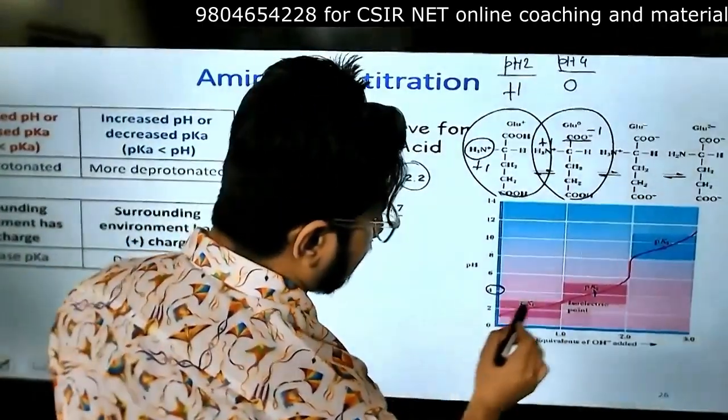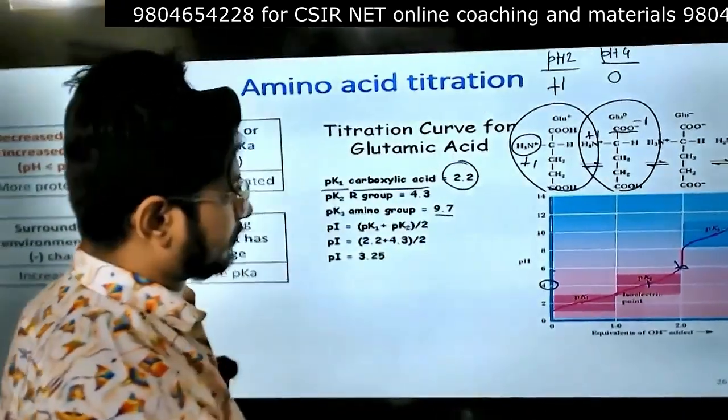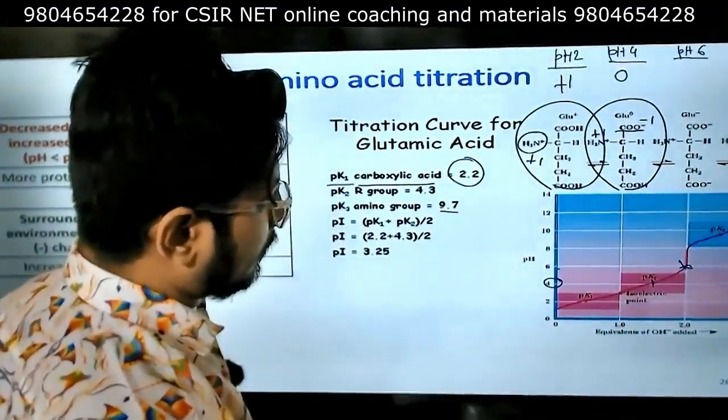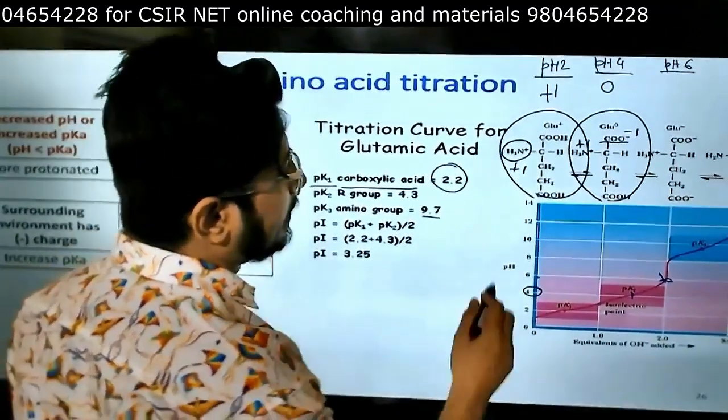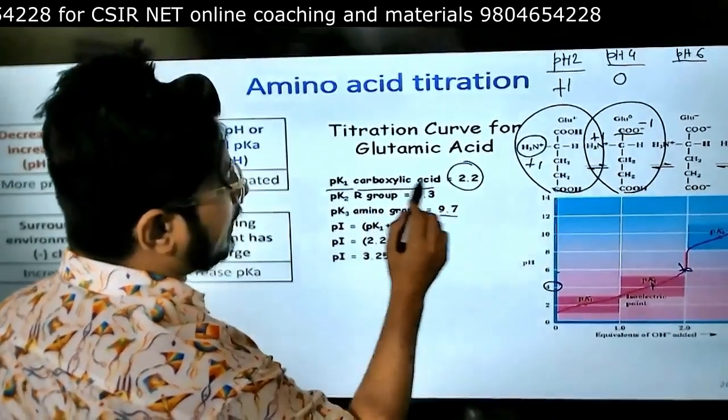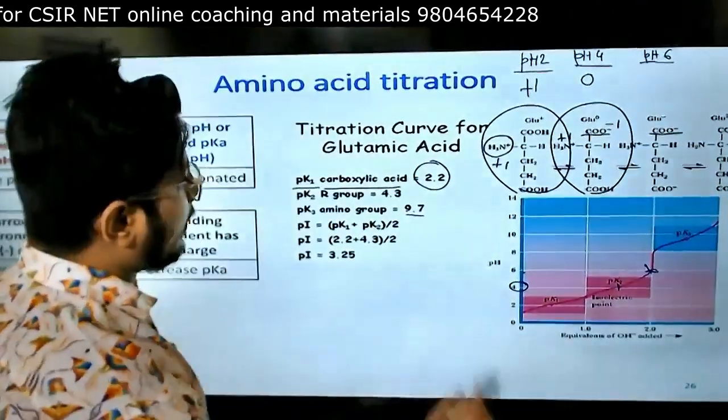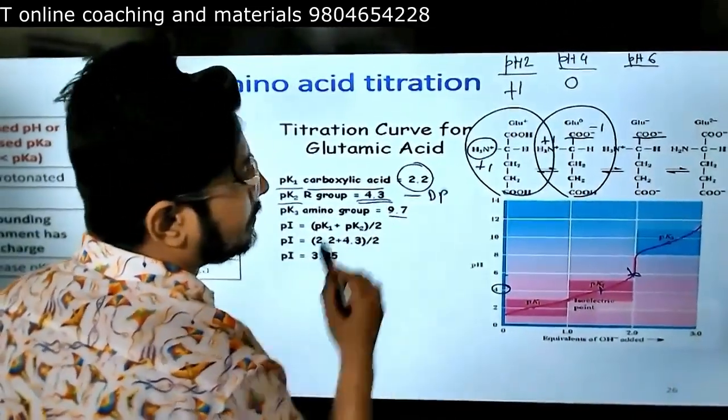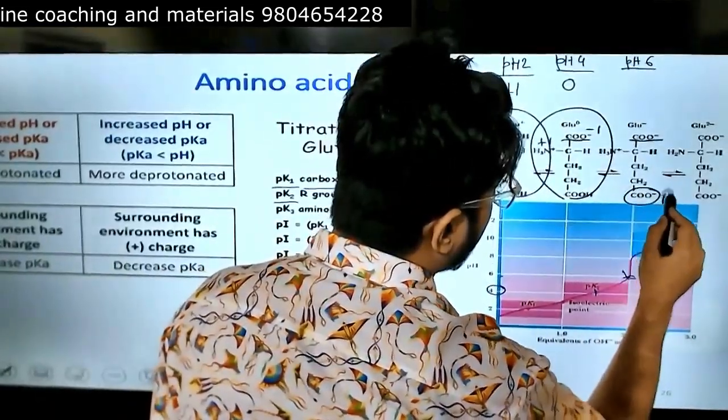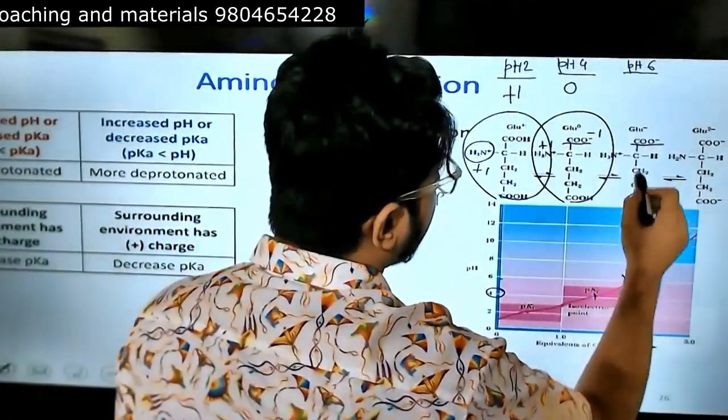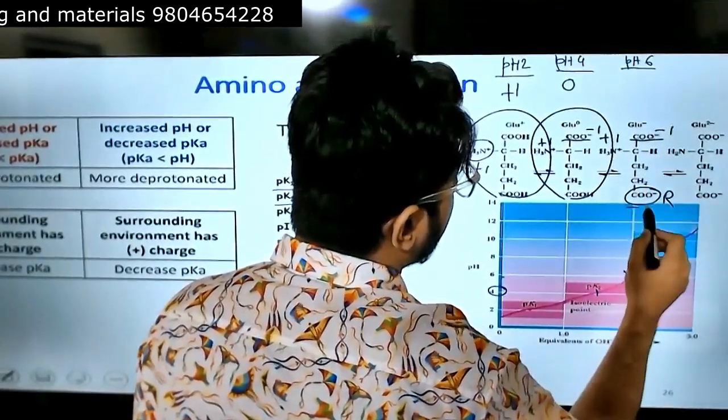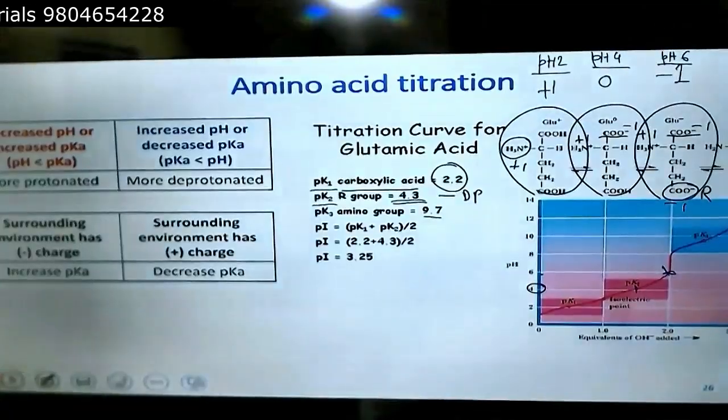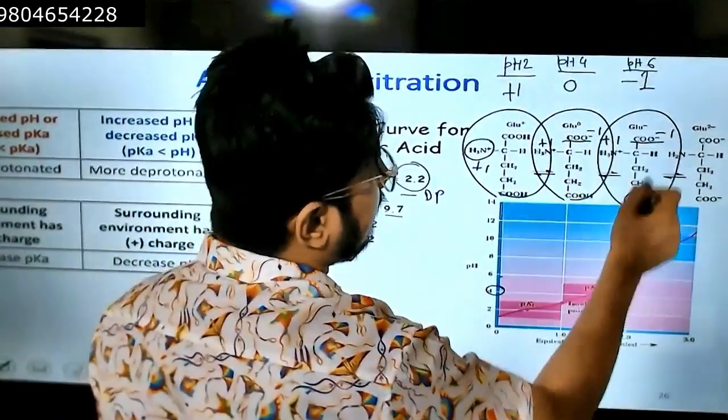Increase the pH to pH 6. In pH 6 what happens? pKa1 is less than pH 6, so deprotonation. pKa2 of R group 4.3 is less than pH 6, so deprotonation here as well from R group. It was plus 1 here, minus 1 here, minus 1 here. So total net charge minus 1.